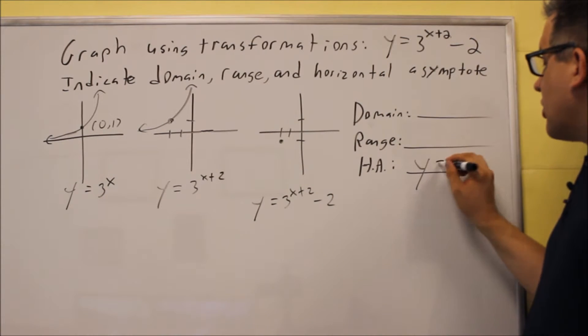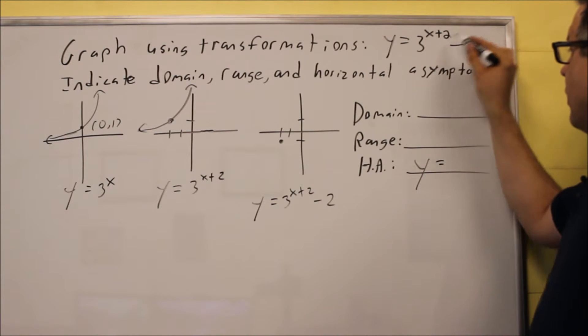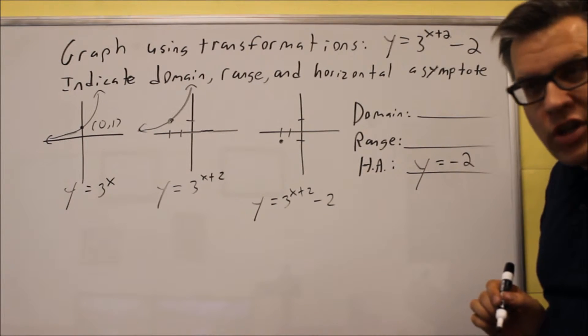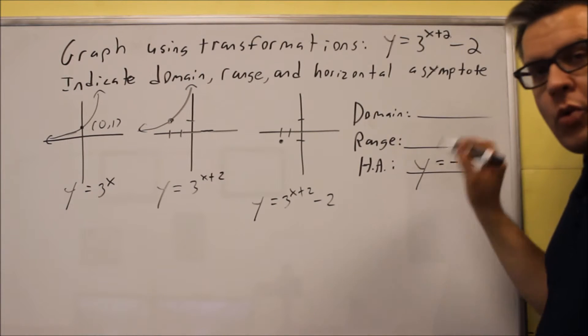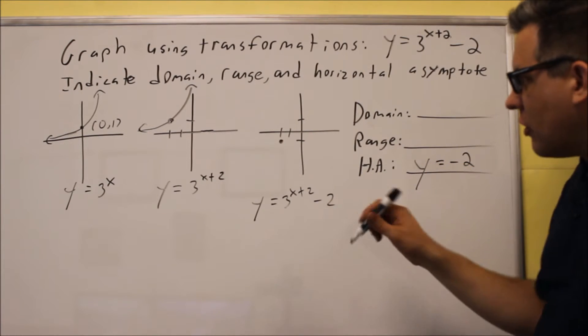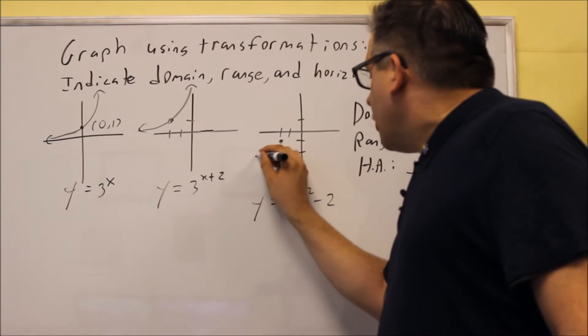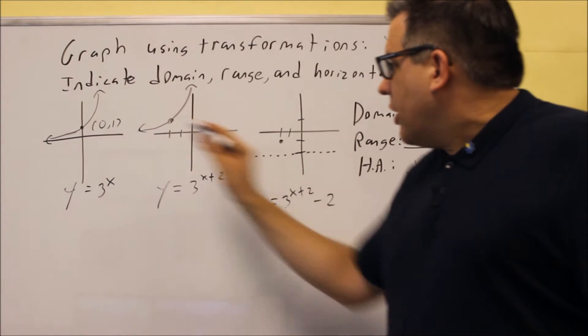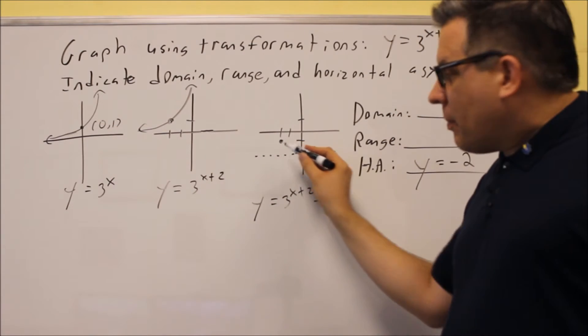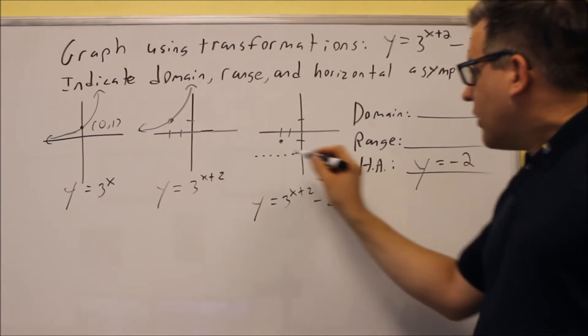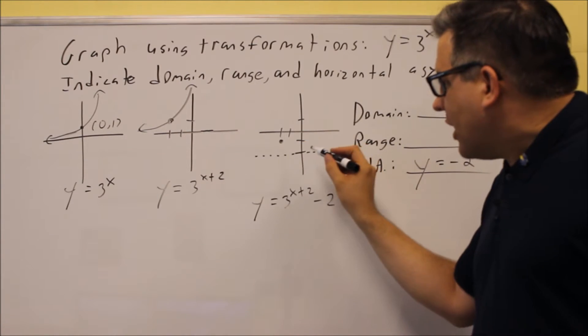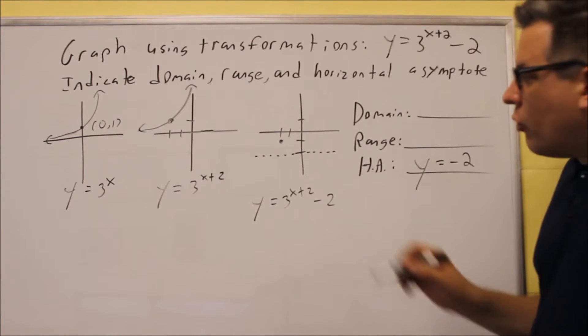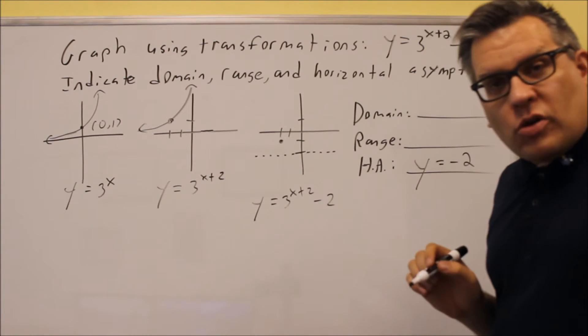So we're going to do y equals 3 to the x plus 2 minus 2. Your horizontal asymptote, you always start out with y equals, and then you're just going to include the number on the end here. So your horizontal asymptote is y equals negative 2. Now the reason why we want to do that part now is because in our final answer, we need to know where that is along there. So here's the point that was originally here and it got shifted down to that point. Our horizontal asymptote is negative 2, so that's going to help us draw that. If we didn't have that dotted line down there, then we might have a wrong shape. We have to have it follow the horizontal asymptote.